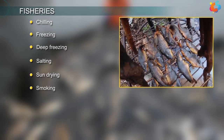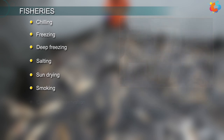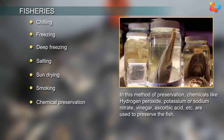Smoking: In this process, the fishes are hot smoked in an oven at a temperature of 60 to 110 degrees centigrade for 4 to 12 hours to kill the non-sporulating bacteria. Chemical Preservation: In this method of preservation, chemicals like hydrogen peroxide, potassium or sodium nitrate, vinegar, ascorbic acid, etc. are used to preserve the fish.